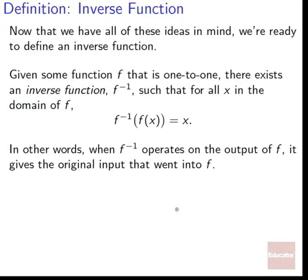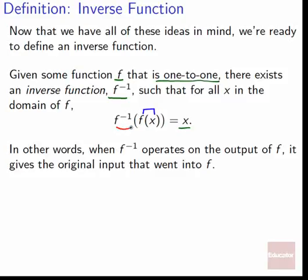Now that we've got all these ideas in mind, we're finally ready to define an inverse function. Given some function f that is one-to-one, there exists an inverse function — denoted as f with a negative one in the top right corner — such that for all x in the domain of f, f inverse acting on f(x) becomes just x. So f acts on x like normal, and then f inverse acts on that whole thing, breaking the action done by f and returning us to our original input.